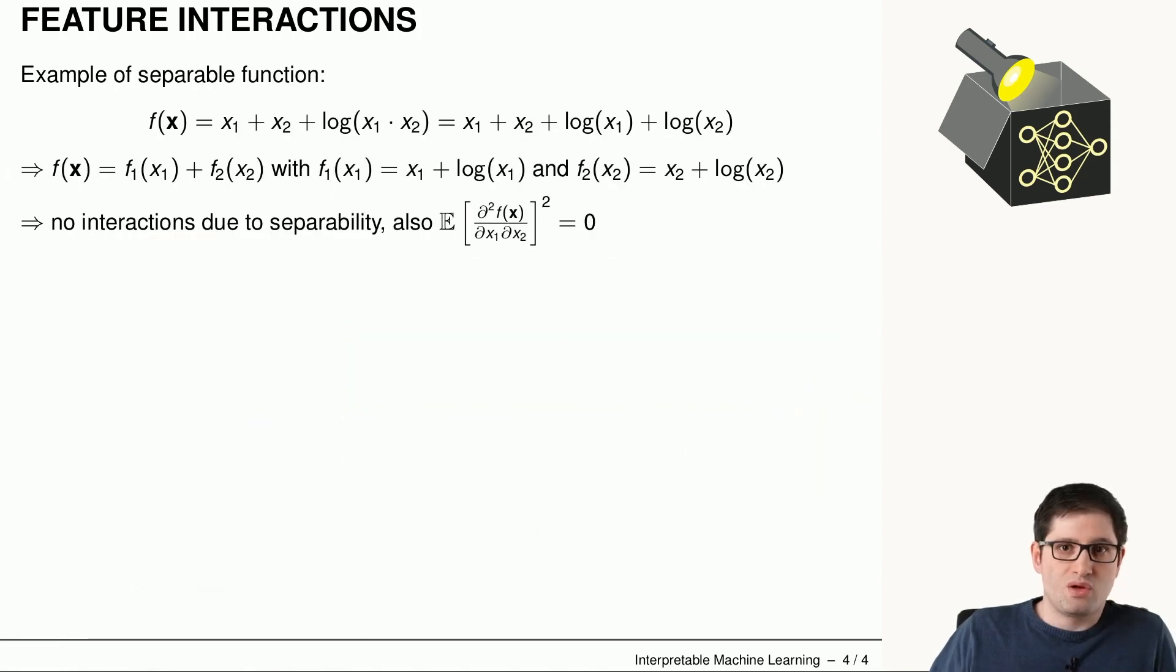So let's look at another example where we have a separable function. We're looking at this function here. Instead of just using the product of x1 and x2, we're just log transforming this product of x1 and x2. So I can already say beforehand,